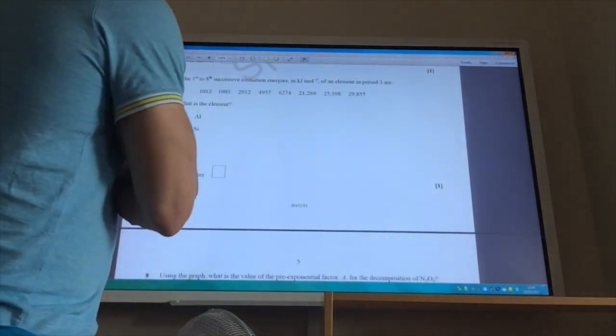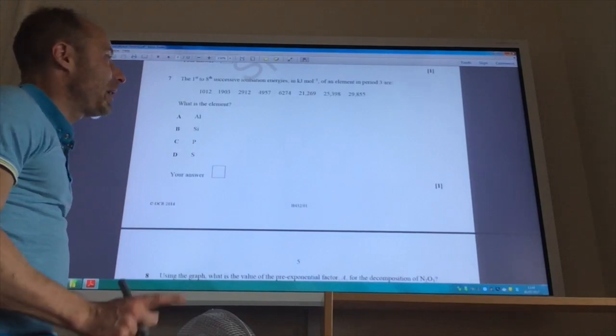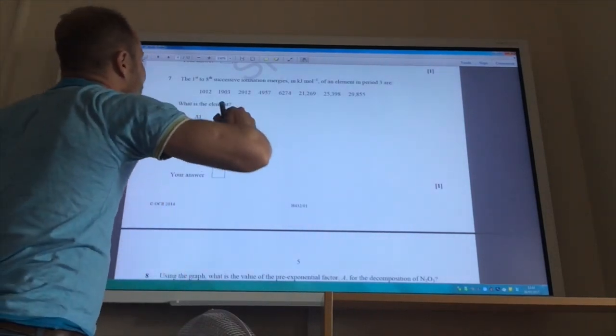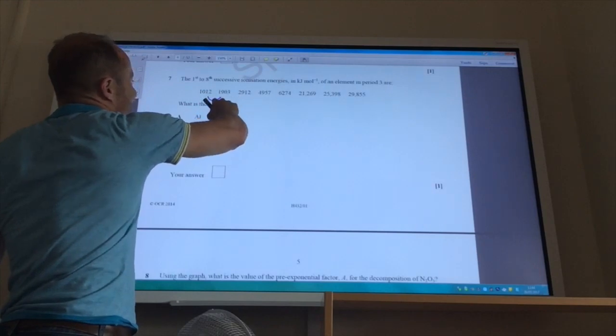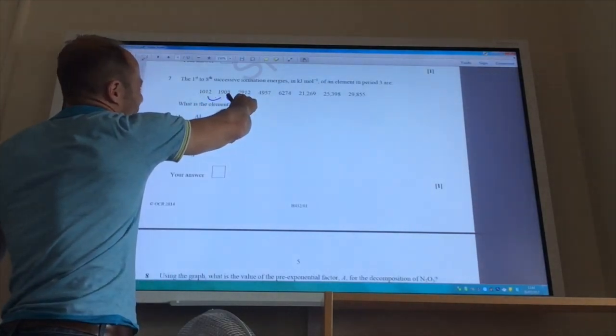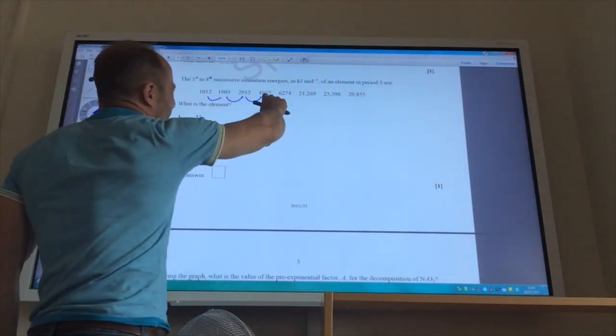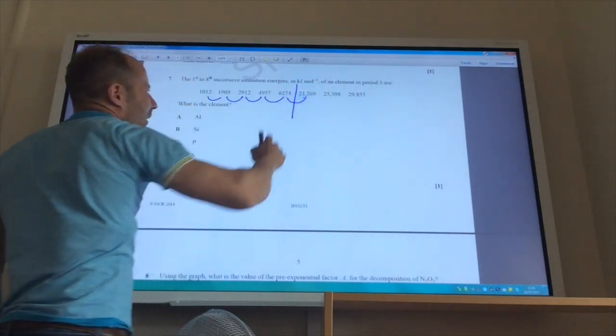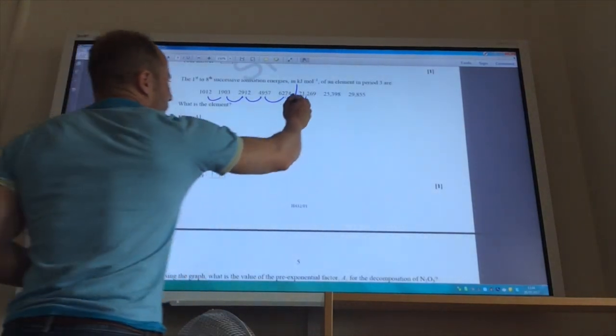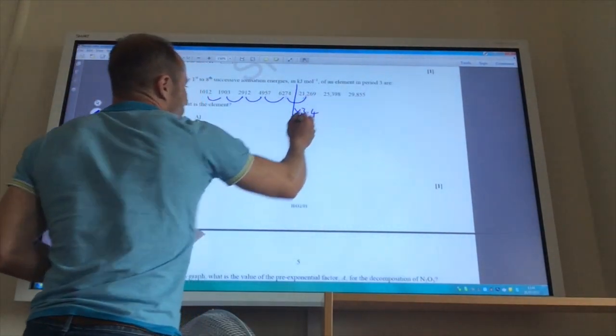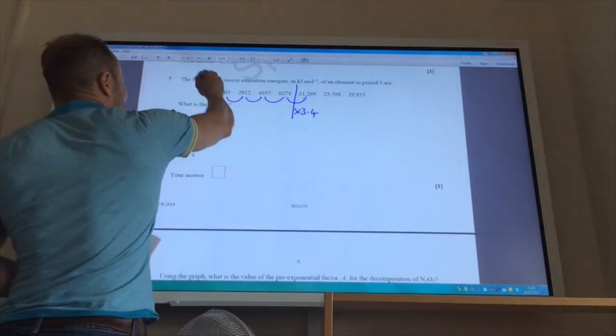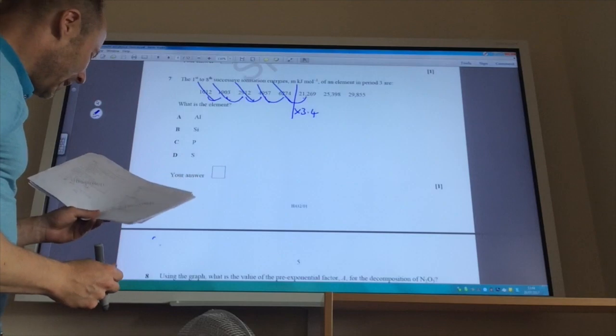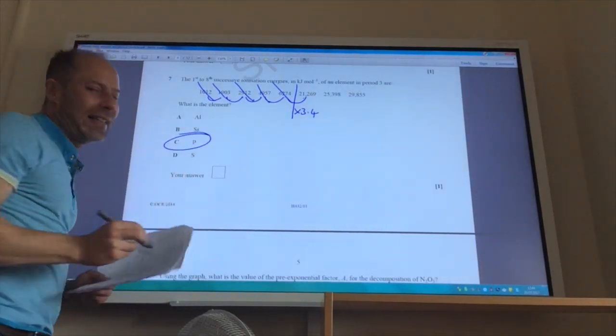So question seven then. The first to eighth successive ionisation energy of an element in period three are shown. What is the element? Well, you can do this really by looking. Going from there to there is times two. That's about times 1.8. But can you see there's a whopping jump there? Going from that one to that one. In fact, that one, if you do it on your calculator, is times 3.4 to get to that. So you have lost one, two, three, four, five electrons in the outermost shell. So it must be in group five. It must be in period three. So the answer is C, phosphorus.